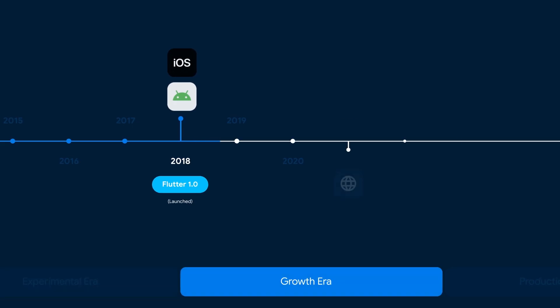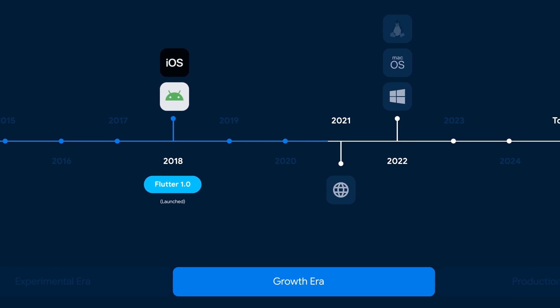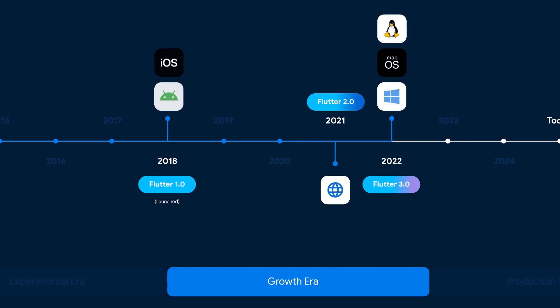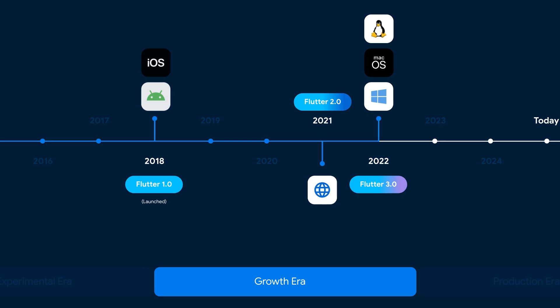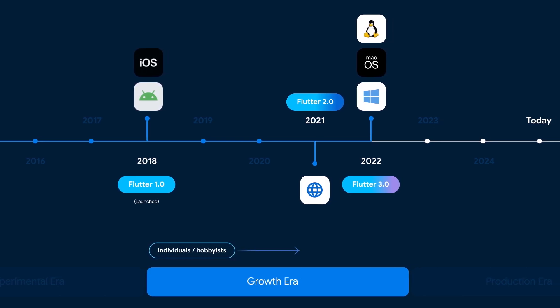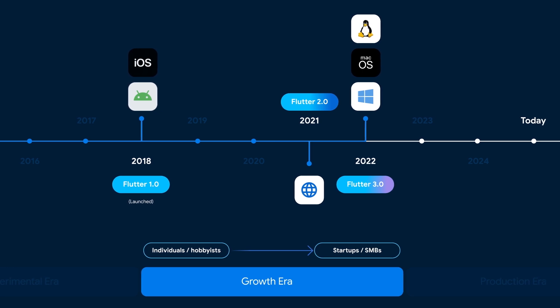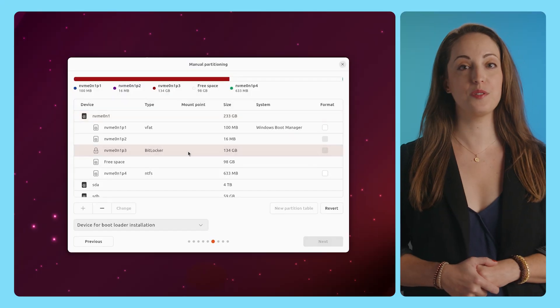Delivering on that vision would come to define Flutter's growth era, a period of time which made clear that our approach and ambition resonated far beyond the Flutter team at Google. The ecosystem around Flutter exploded with new faces in code. We expanded support from mobile to web and desktop. The sizes and types of teams willing to bet on Flutter grew from individual hobbyist developers and small teams to startups and small to medium-sized businesses. New design libraries were popping up in the Flutter community, like Fluent UI, macOS UI, and the Ubuntu-inspired Yaru widgets.